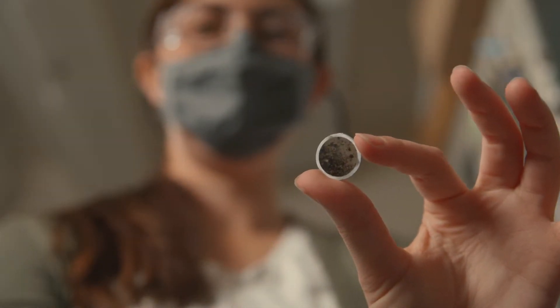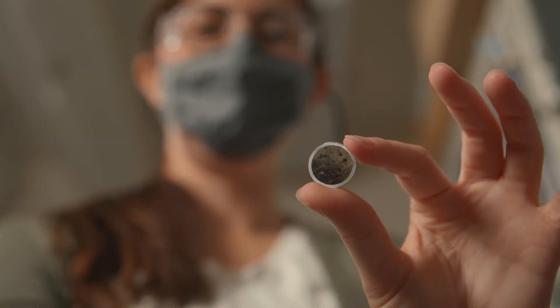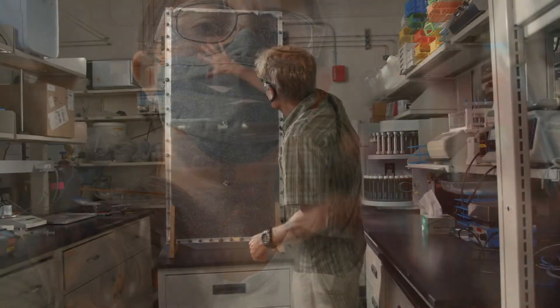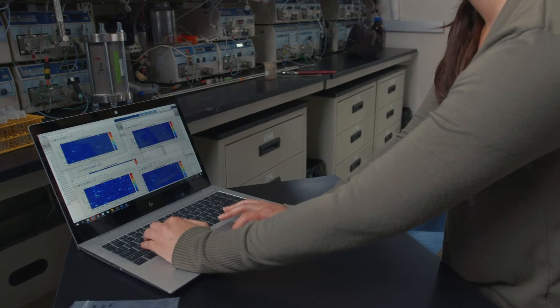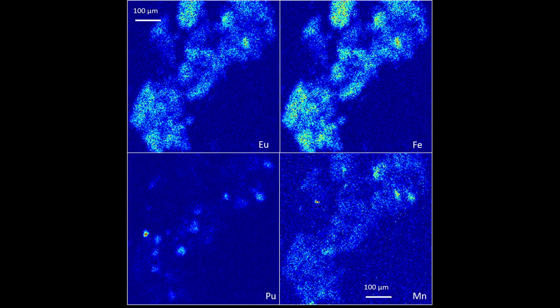Soil samples can be analyzed from the nanoscale to large-scale lab tests depending on what we need to learn about a sample. The complex chemical processes controlling contaminant behavior can be understood with measurements on electron microscopes.